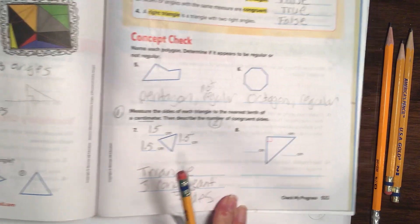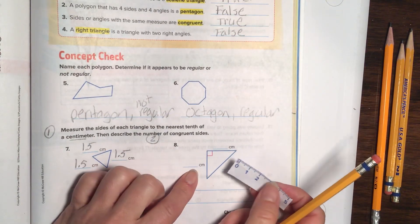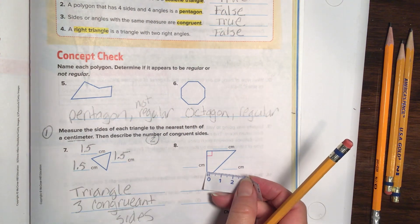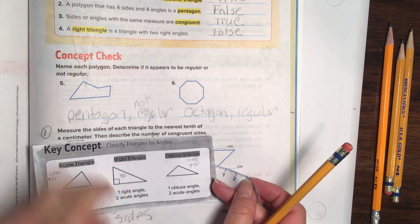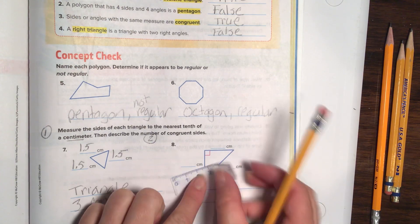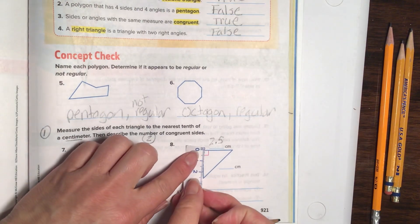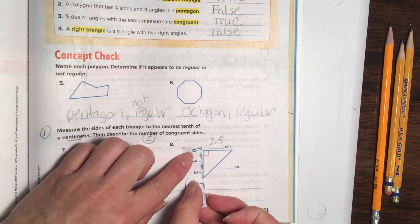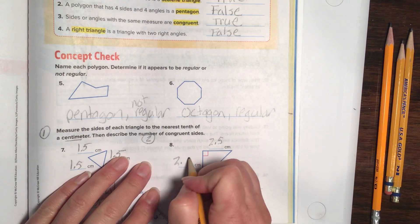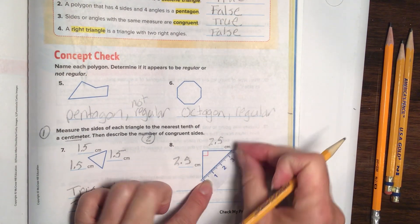Alright, number eight. I'm going to measure this one again. Ooh, there's a right angle. Ooh, so this kind of tells me which triangle it might be, because it has a right angle. But let's go ahead and measure, because that's what it wants us to do first. About 2.5. And then let's measure this one. 2.5. Yay! And this one would be about 3.5.